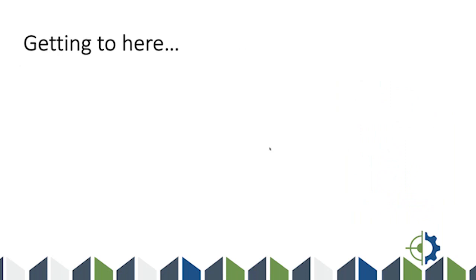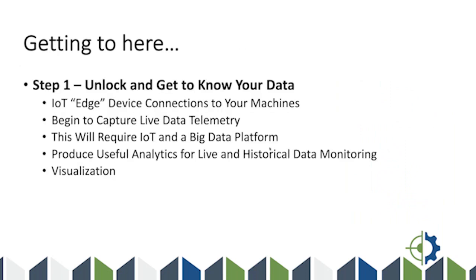Getting there involves three steps. Step one is unlocking your information — getting to know your data. Everybody's got data; it's often on the floor, trapped in machines, only visible at a local machine HMI control window. Starting to do things such as putting in what we call edge device connectors to machines begins to unlock that information and stream it into a platform where we can begin to do these things — capture live data telemetry, ingest and store it in a big data platform at very low cost, produce useful analytics, visualize it both live and historically.